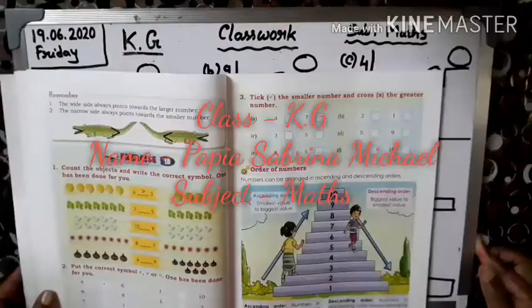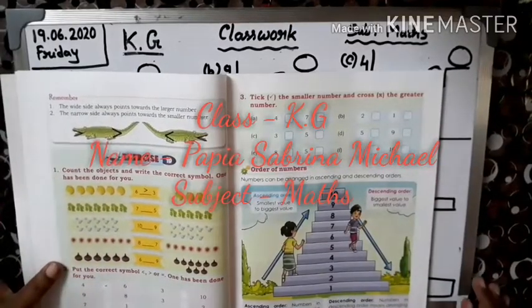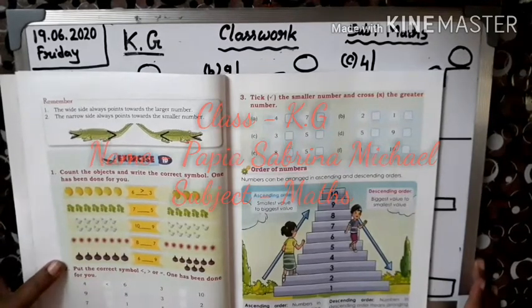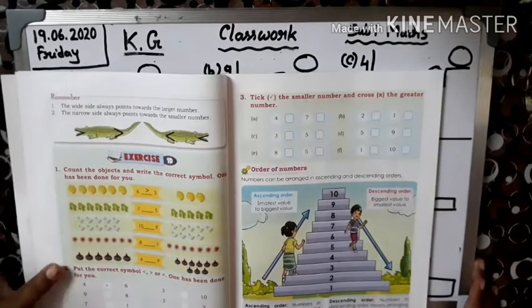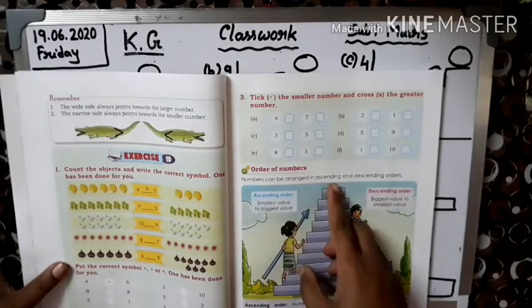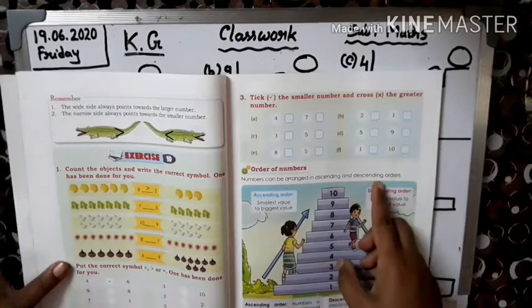Hi children, good morning. How are you? Today we are going to study maths. So let's start. Page number 19, order of numbers. Numbers can be arranged in ascending and descending order.